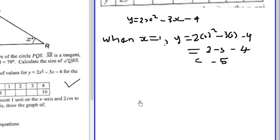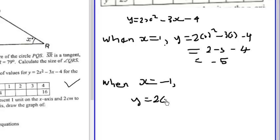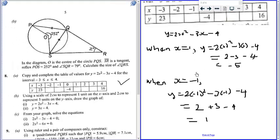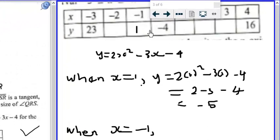Now when x equals negative 1, y will be equal to 2 into negative 1 squared minus 3 into negative 1 minus 4. This will be equal to 2 plus 3 minus 4, which gives us 1. So when x equals negative 1, you get 1, and when x equals 1, you get negative 5.